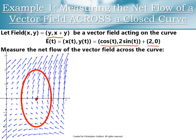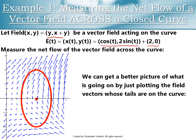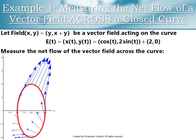It's kind of hard to tell what's going on from that plot, so we can get a better picture of what's going on if we just plot the field vectors whose tails are on the curve — basically if we just plot field of x of t, y of t. There's a slightly better picture, though still kind of tough to measure the net flow of the vector field across that curve.